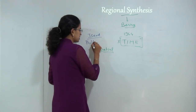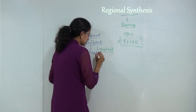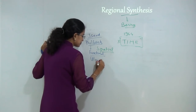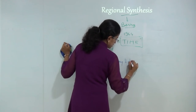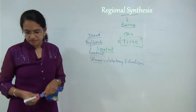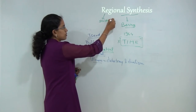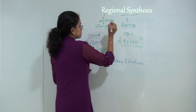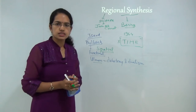Then came Philbrick. Philbrick tried to demarcate regions based on functional characteristics, giving a functional classification of regions. Then there was Ullmann who tried to provide the concept of dichotomy and dualism, which we would be discussing in further sessions. And then there was the concept where you tried to explain regional synthesis as a subject of science, and this was laid forward by James Conant. These were some of the major developments which led to the origin of the concept of regional synthesis.